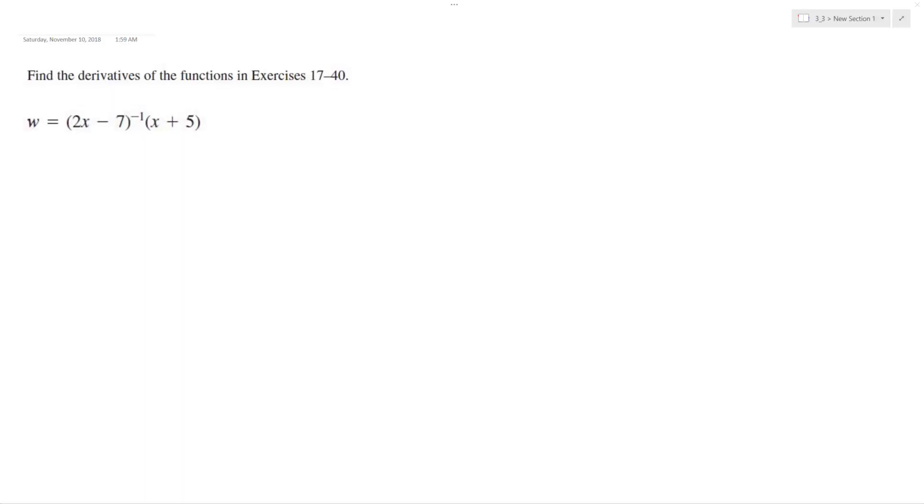I want to solve the following problem and find the derivative. I'm going to rewrite this in rational form, so x plus 5 over 2x minus 7. I could use the product rule here, but I'm going to rewrite it as a quotient instead.